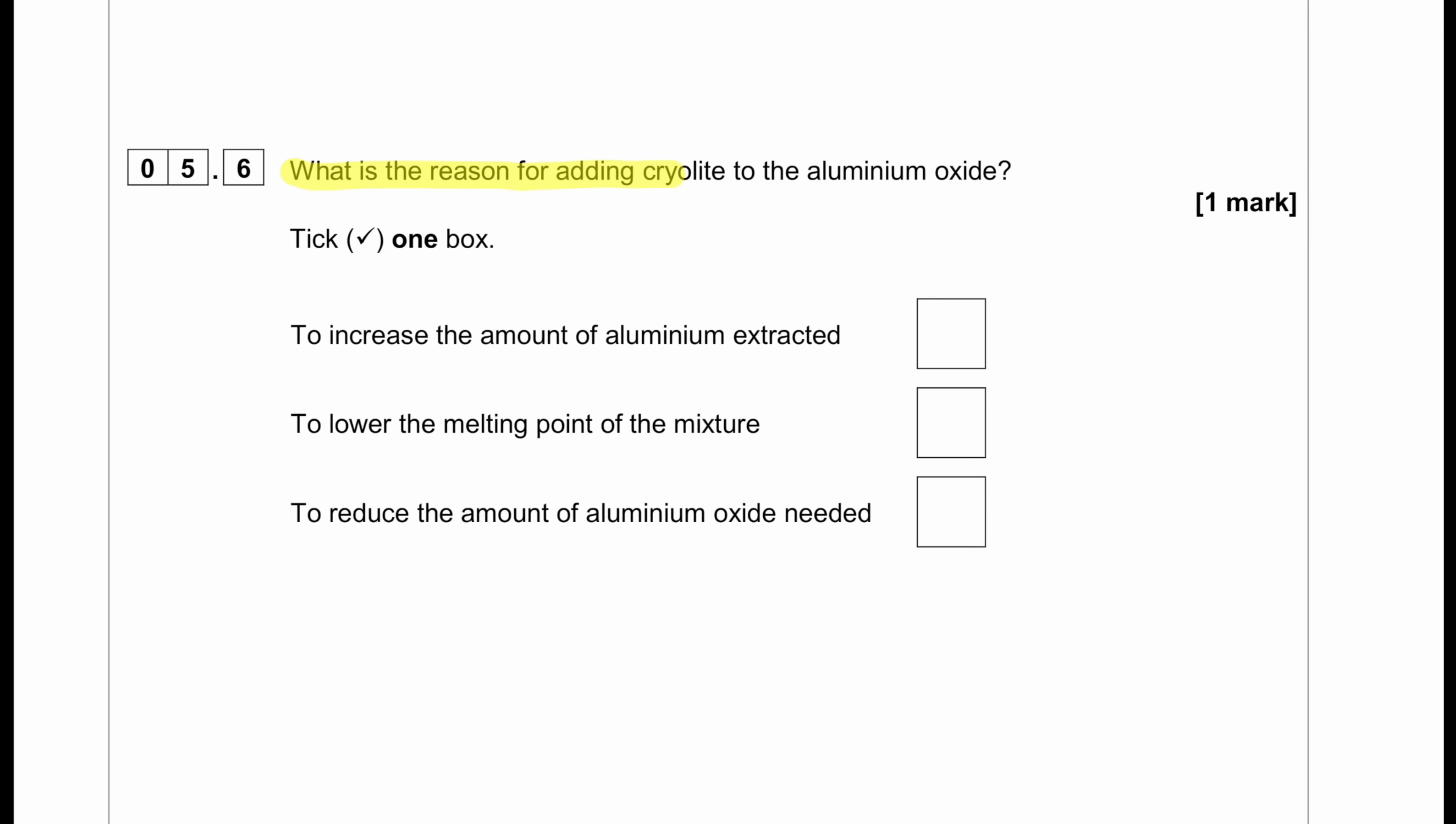What is the reason for adding cryolite to the aluminium oxide? We can see the cryolite is an impurity. So when we add impurity to any pure substance, its melting point is lowered. Let's see the options. To increase the amount of aluminium extracted? No. To lower the melting point of the mixture? Definitely.